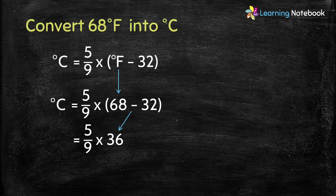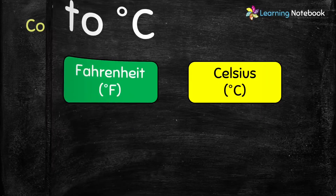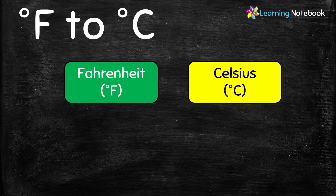Now let's simplify it. 9 into 4 equals 36, so we get 5 into 4, which equals 20. So students, 68 degree Fahrenheit equals 20 degree Celsius. Now let's see another way to convert Fahrenheit into Celsius.